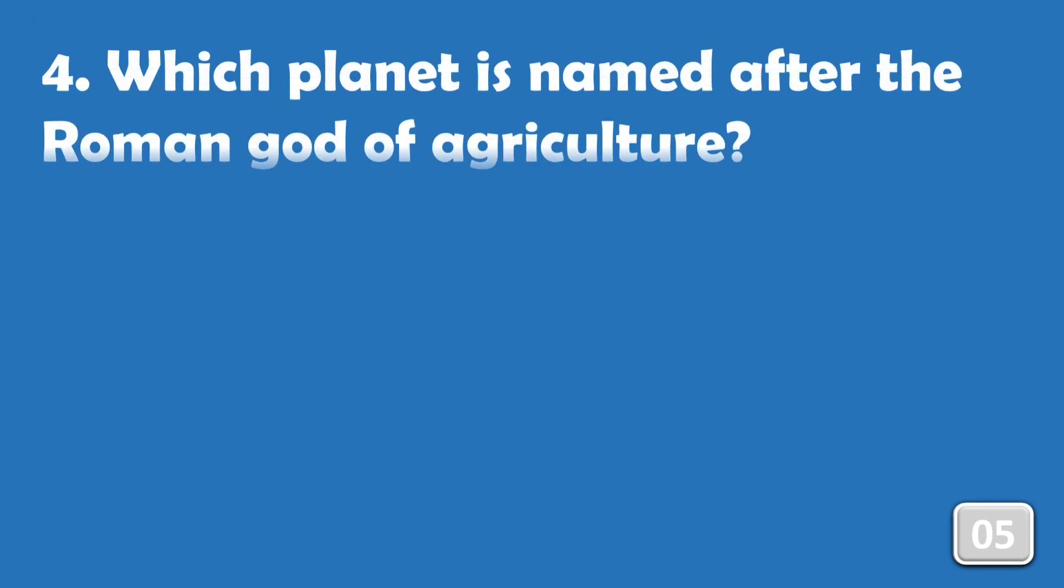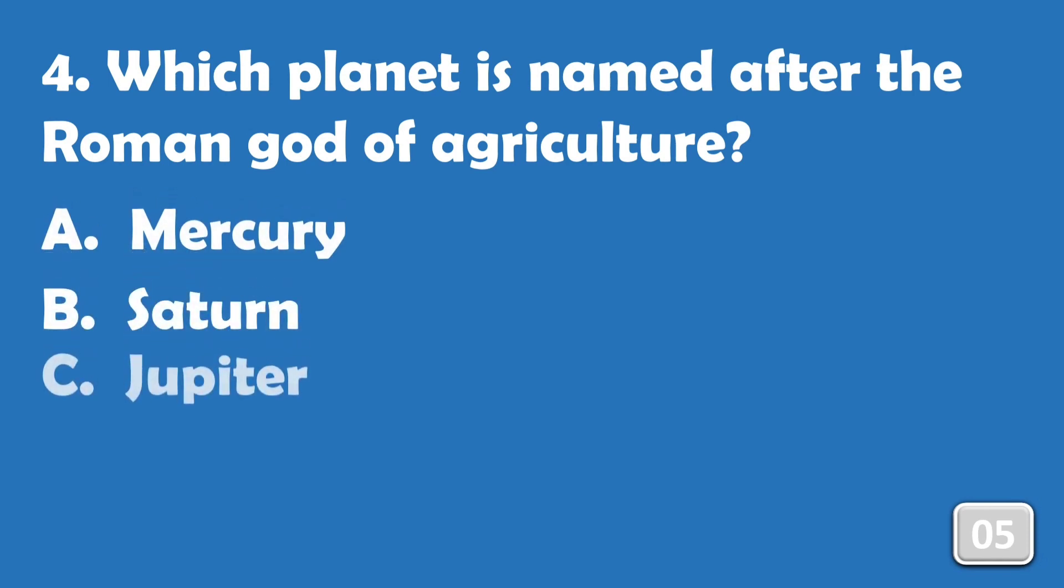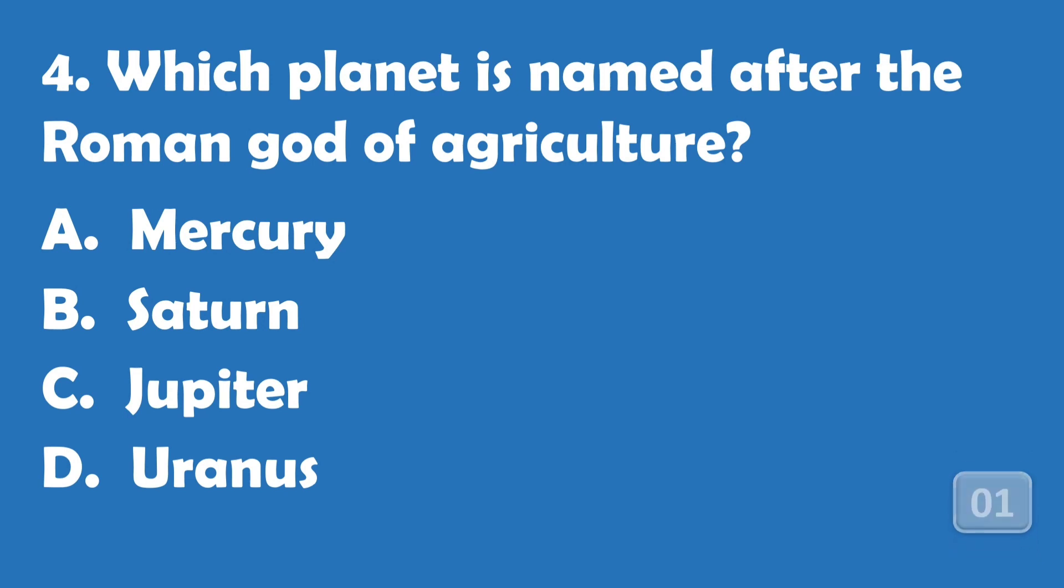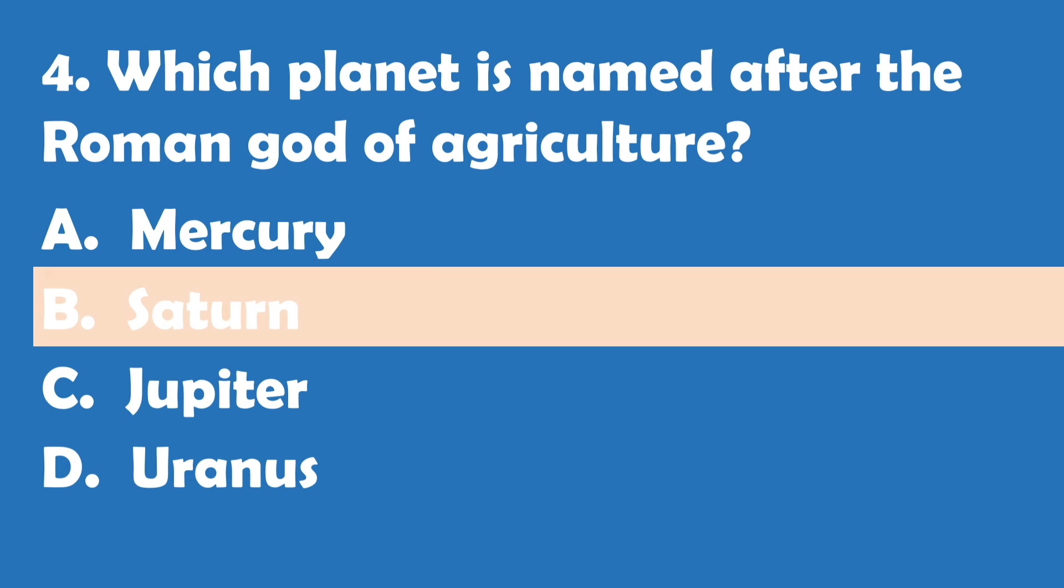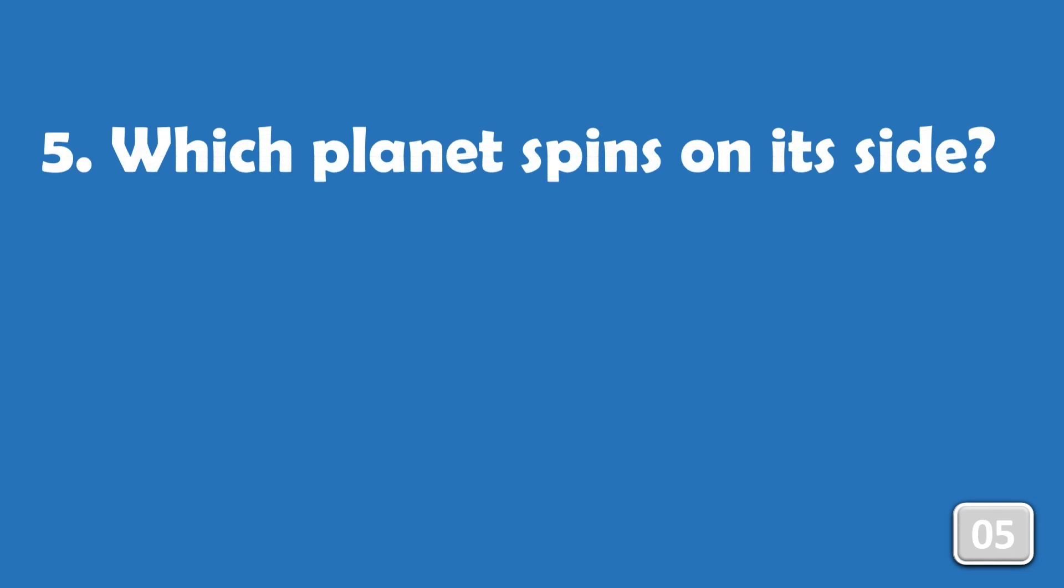Which planet is named after the Roman god of agriculture? Options are: A) Mercury, B) Saturn, C) Jupiter, or D) Uranus. The right answer is option B, Saturn. Which planet spins on its side? Options are: A) Venus, B) Mars, C) Mercury, or D) Uranus.